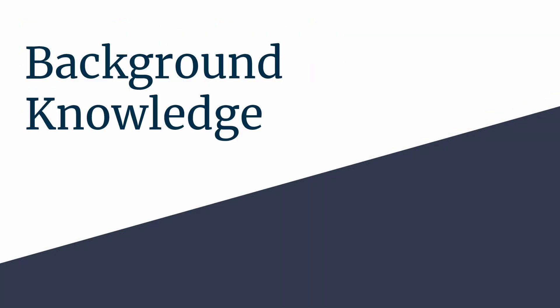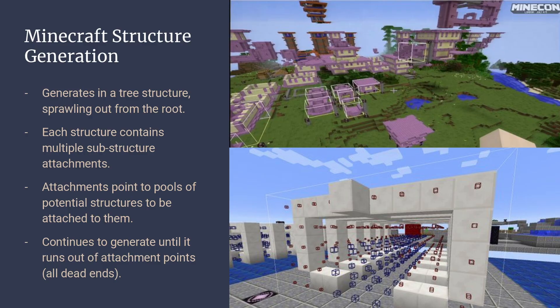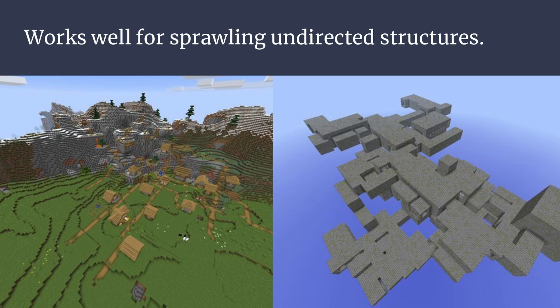First, I'd like to quickly cover how Minecraft's structure generation system works. Minecraft generates structures recursively, starting with a root structure which may contain multiple attachment points for other substructures called jigsaw blocks. These attachment points reference pools of potential substructures which may be attached to them with variable probabilities. After placing a structure, it iterates through all jigsaw blocks, selects a random structure from the pool, and randomly selects an attachment on the chosen structure to connect to the source. This process repeats until there are no more jigsaw blocks, the structure hits a hard-coded maximum volume, or no structures can attach without overlapping already placed structures.